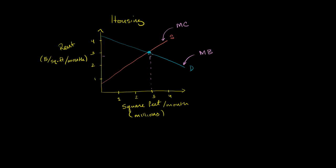After 3 million square feet, it doesn't make sense. If a builder adds more square feet, it costs them over $3, but people aren't going to get $3 of benefit from those incremental square feet. So there's no reason for anyone to build beyond that point. That's why 3 million square feet is the equilibrium quantity, and the equilibrium price is $3 per square foot per month.